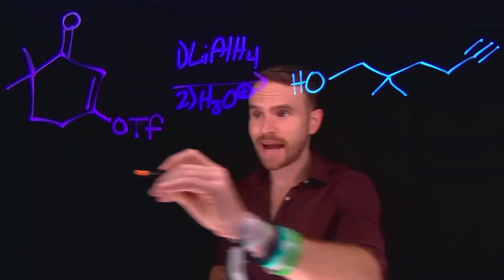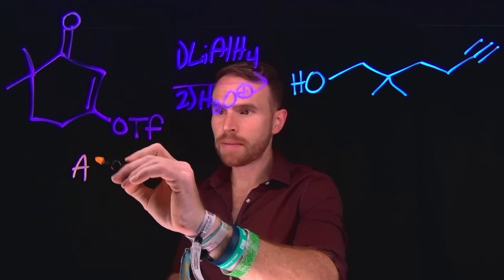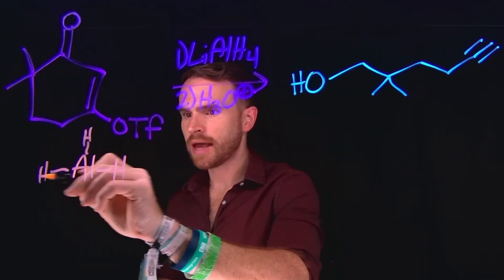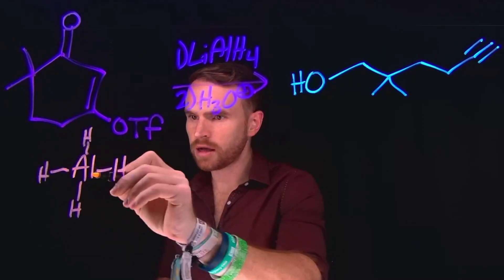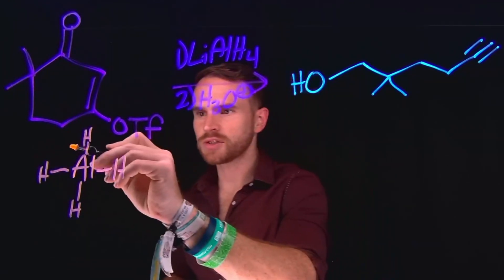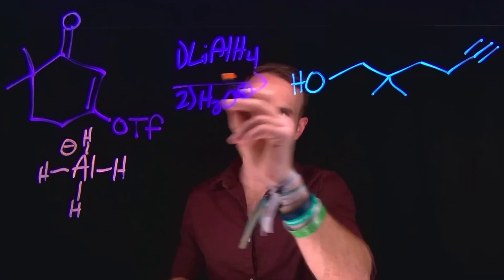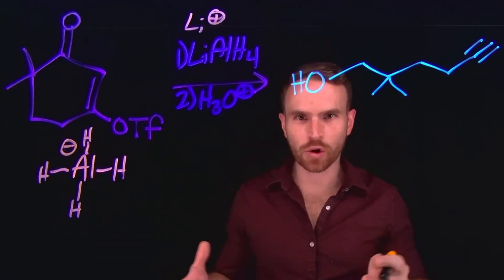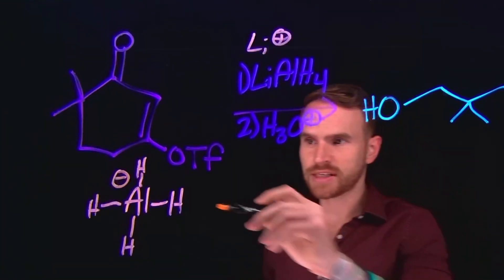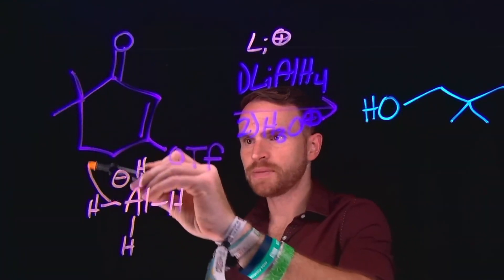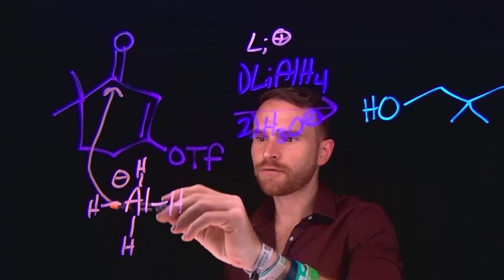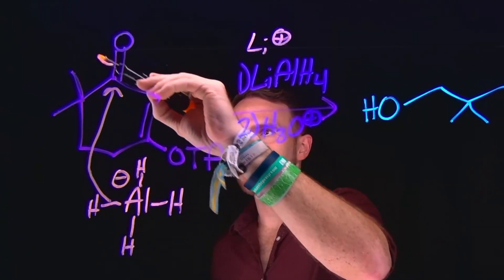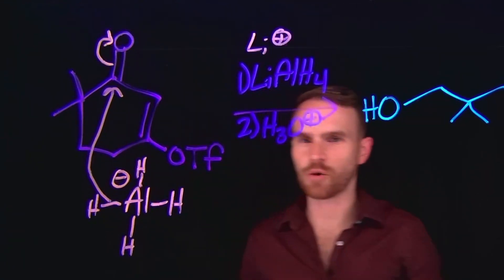In fact, that's exactly how this mechanism begins. Remember that lithium aluminum hydride can be drawn out as aluminum with four aluminum-to-hydrogen bonds, which is overall negatively charged. The lithium component is just the counter ion for this hydride-donating species. The first step is attack from this hydride to this carbonyl carbon position, which kicks up the pi electrons to being located on oxygen.